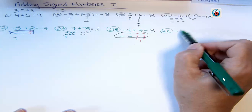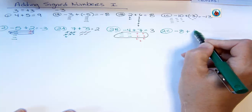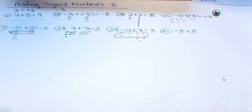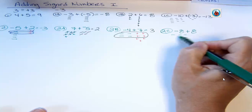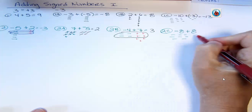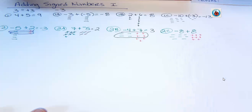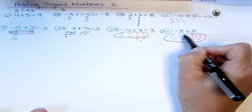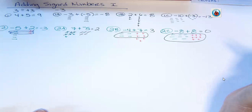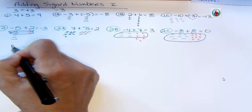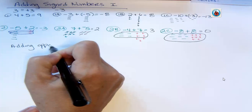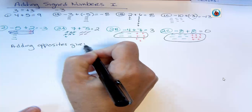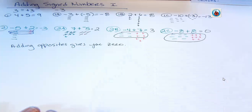Negative eight plus positive eight: do I have more negatives or more positives? You should answer that you have the same number — eight negatives and eight positives. Those eight negatives cancel those eight positives and give you zero. Here's a little rule: adding opposites gives you zero. Eight and negative eight are opposites, and anytime you add opposites, you get zero.